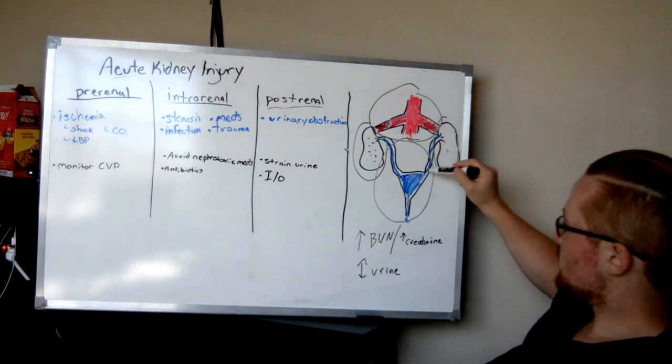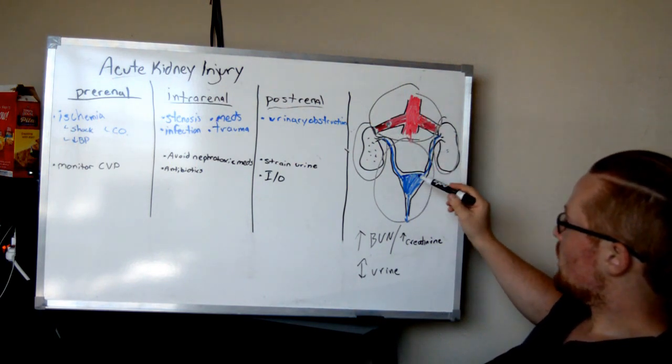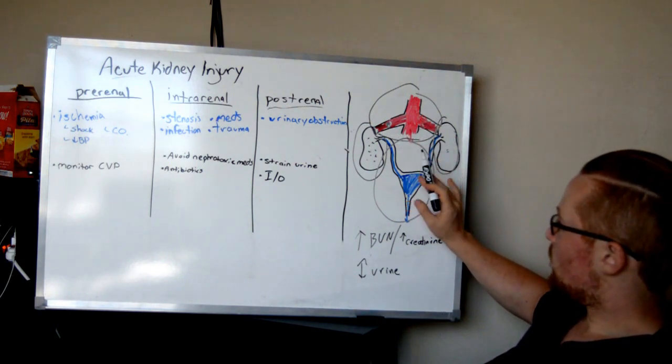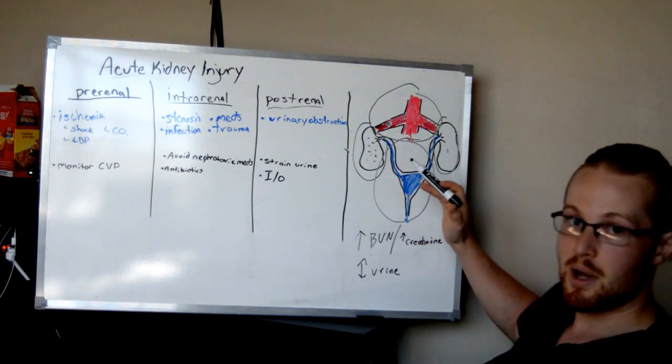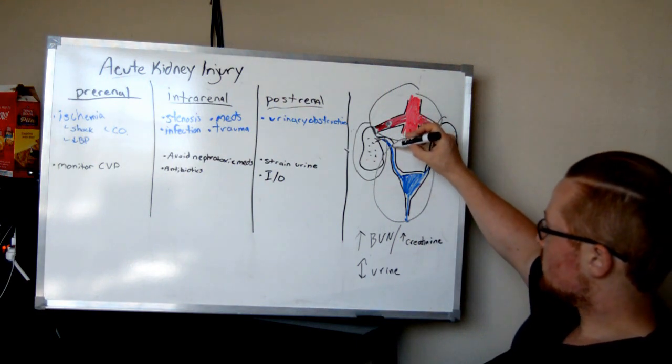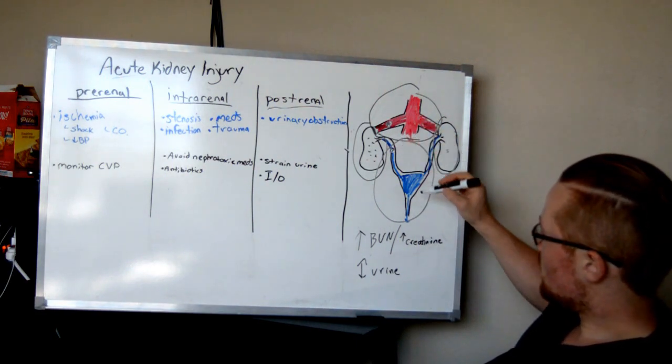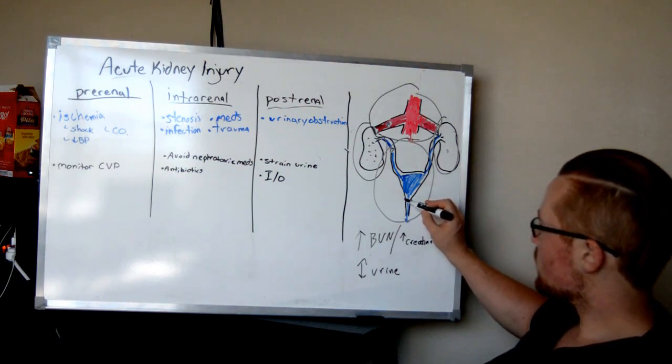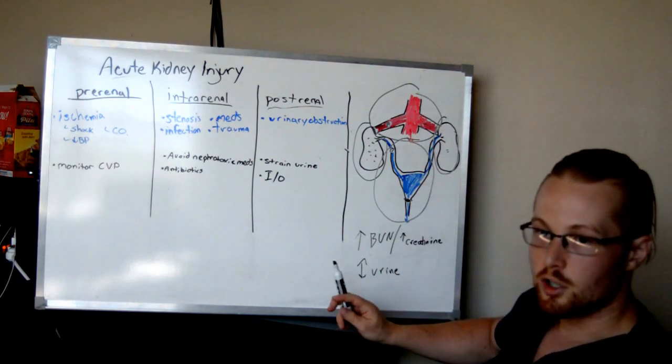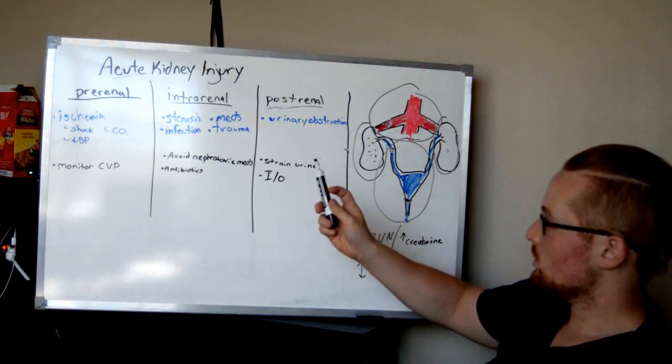Postrenal refers to something in the urinary system here. So, something is blocking it. So, there's a urinary obstruction. So, the kidneys are no longer able to push out urine. They back up and they don't work. That could be due to a kidney stone or say there's a spinal injury and you can no longer use the muscles to empty the bladder. These are examples of urinary obstructions that can lead to acute kidney injury.